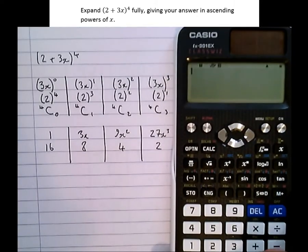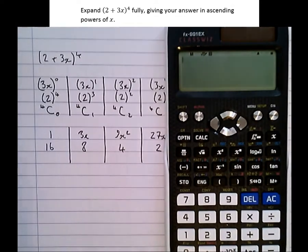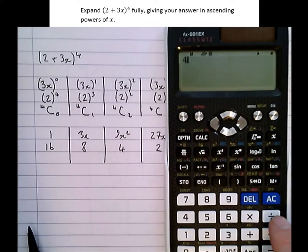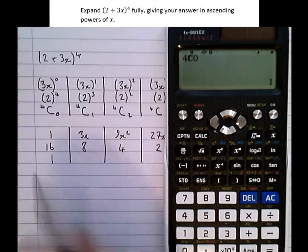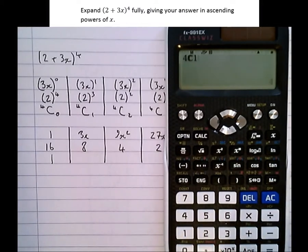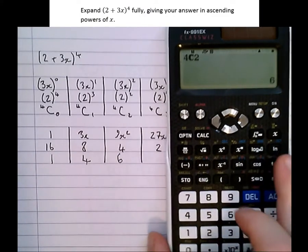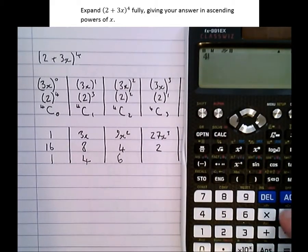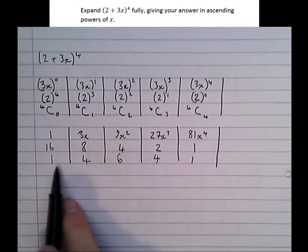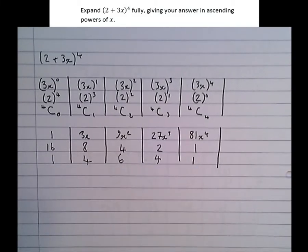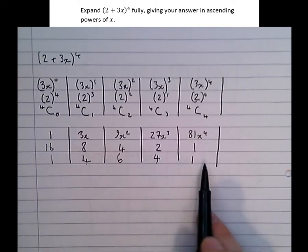Let's look at how to use the combinations operator on the calculator. To get the choose button, it's shift then the divide button — above the divide button is C. So: 4C0 is 1, 4C1 is 4, 4C2 is 6, 4C3 is 4, and 4C4 is 1. Notice the symmetry: 1, 4, 6, 4, 1 — it's always symmetrical down the middle, so you know you've probably got it right if you have a symmetrical set of terms.